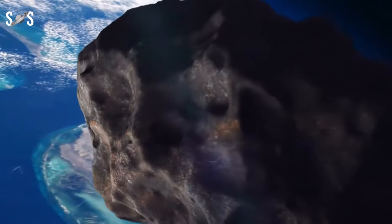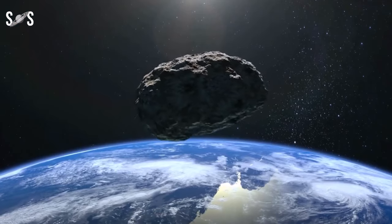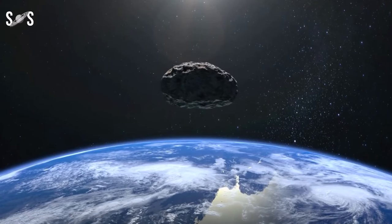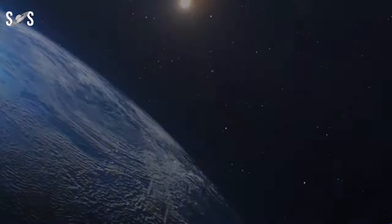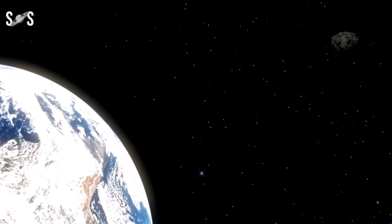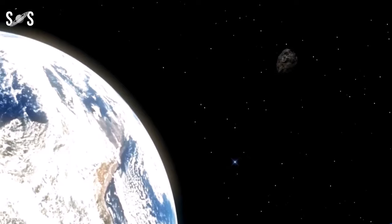Earth is about to have a new visitor in its cosmic neighborhood, but this isn't a typical flyby. Imagine a small rock roughly the size of a house hitching a ride around Earth for a couple of months before waving goodbye and continuing its journey around the Sun.